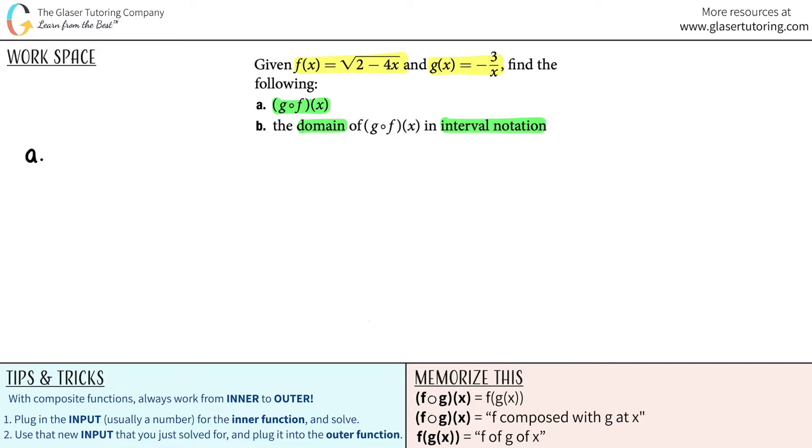I'm going to say g composed with f at x is the same thing as, now take note, the first one that they say is the outer function. The second one is the inner function. So I'm going to say g of f of x, because this is the outer, and the f function is the inner.